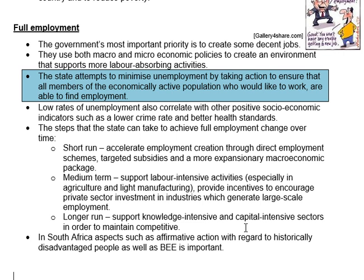The government can use both their macro and microeconomic policies to create an environment that supports labor-absorbing activities. The whole idea is that the government is trying to minimize unemployment — to decrease unemployment so that everybody in the economically active population who wants to work is able to find employment. To be part of the economically active population, you have to be between the ages of 16 and 65, mentally and physically able, willing and wanting to work. Full employment means everybody in that category will be able to find a job.